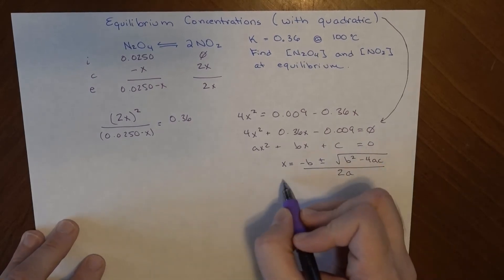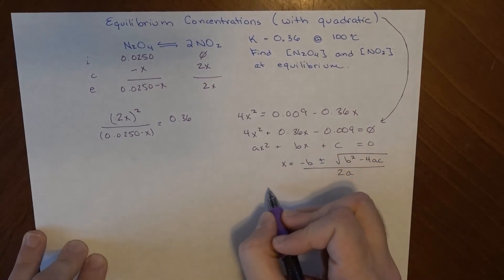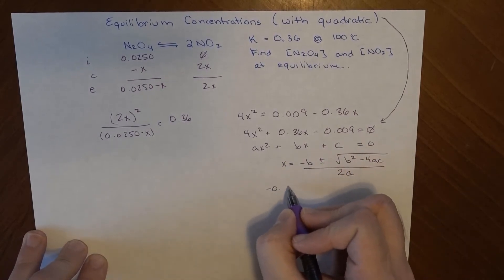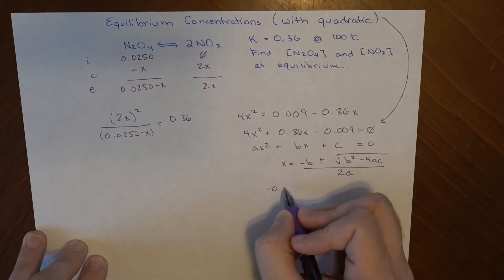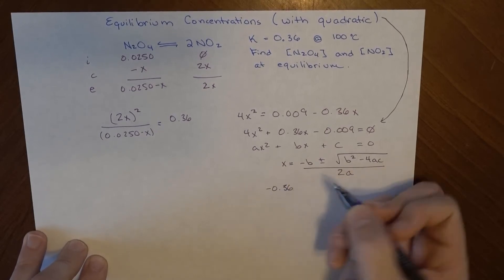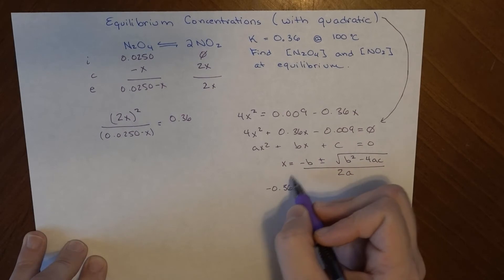When you do that, you get an expression that looks like this, negative 0.36. Now why do I have that? Oh yeah, no, negative 0.36, that's right. Because it's opposite of b, so opposite of positive is negative.